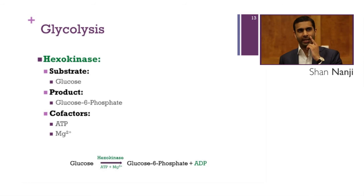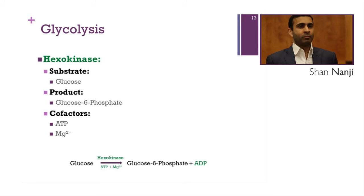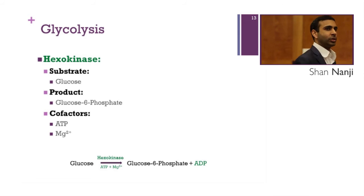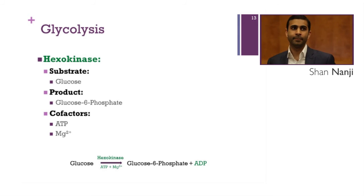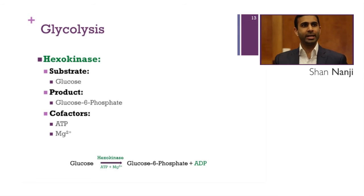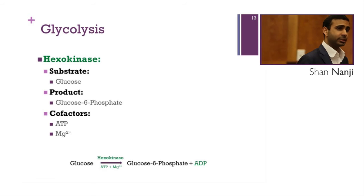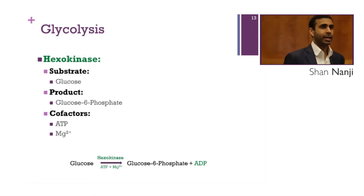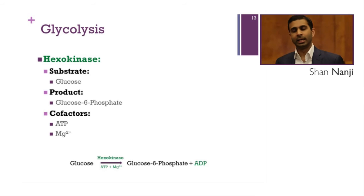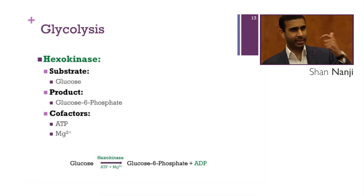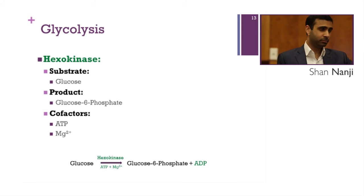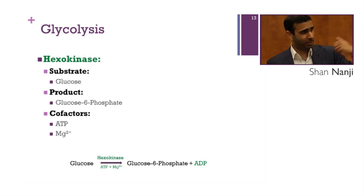Let's start with hexokinase. The substrate for hexokinase is glucose and the product is glucose 6-phosphate. The cofactors are magnesium and ATP. Kinases phosphorylate molecules — phosphorylation makes the molecule larger and more charged, making it harder to cross the membrane and trapping it inside the cell so enzymes can act on it.